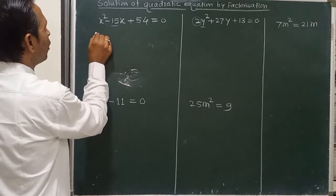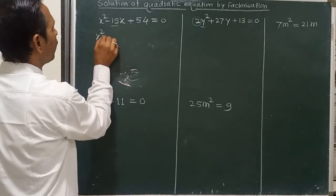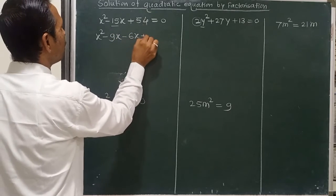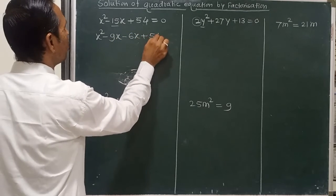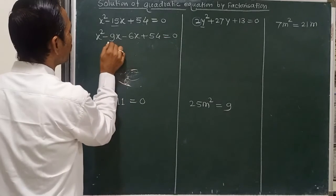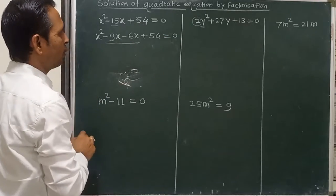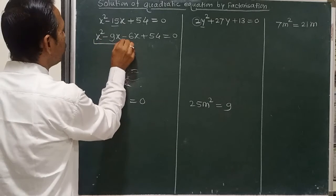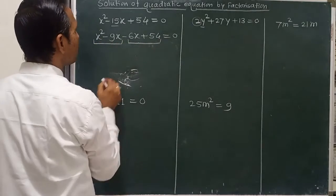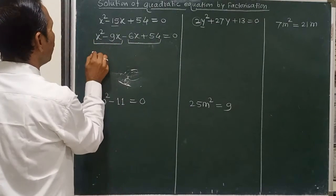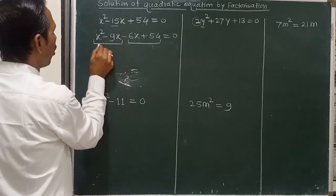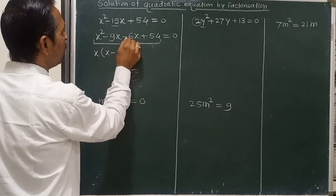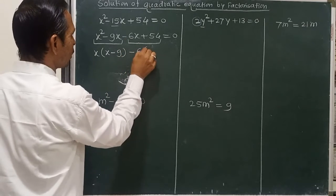Split the middle term like this: x squared minus 9x minus 6x plus 54 is equal to 0. This is called splitting of the middle term. Then, taking out the common factor from the first two terms and the next two terms, the common is x, so we write x times (x minus 9). The common from the last two terms is minus 6.